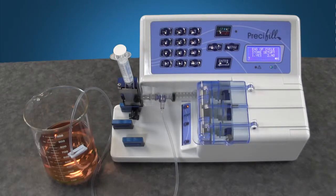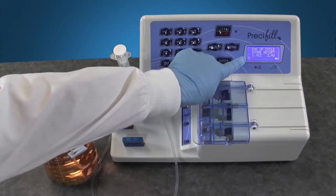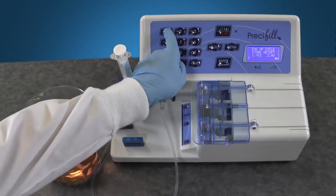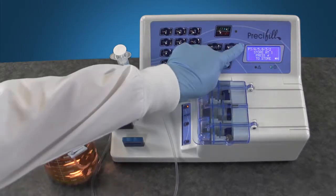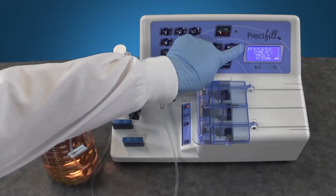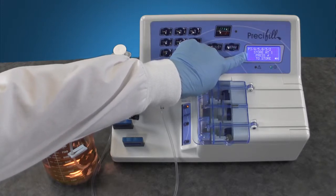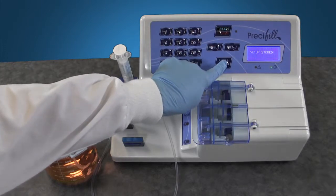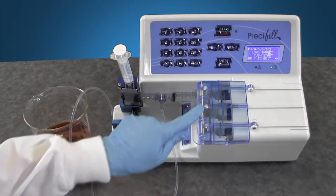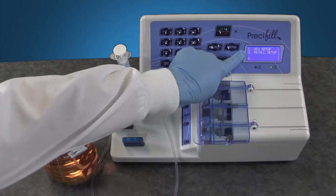Once you complete an automatic cycle fill the programming screen will state store setup. To save this setup press 1 for yes and then enter. The screen now shows the details of the program and which number in recall it was stored as. In this case it is being stored as 1. Press enter to complete the store. You can now access this in future from the main menu screen under option 2 for recall setup.